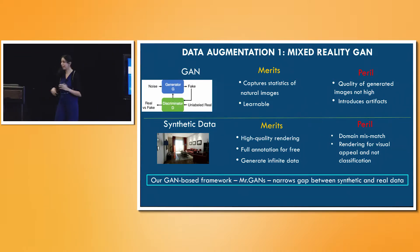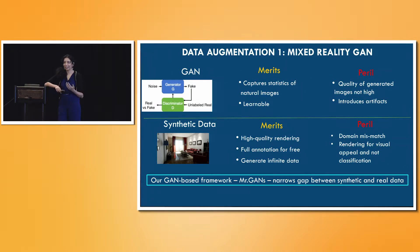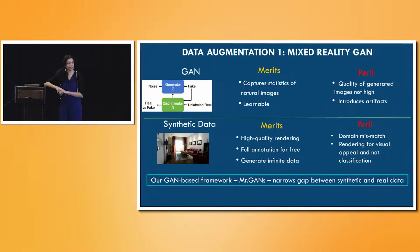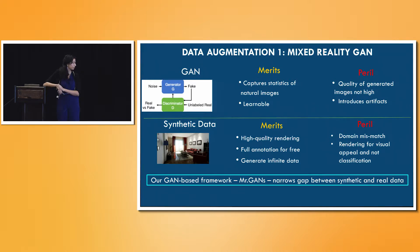Can we use other existing frameworks for generating images? The field of graphics has spent decades designing good renderers and good animation frameworks that can generate realistic looking images and videos. Can we utilize this? This is great for visual realism, but the distribution can be quite different from natural images, because to make it look realistic to the eye, there can be quite a bit of bias introduced in the process of rendering.